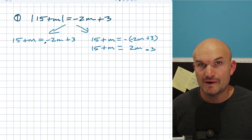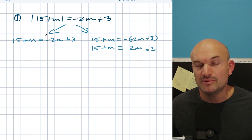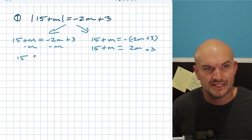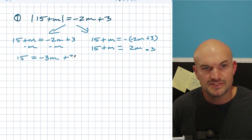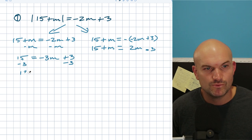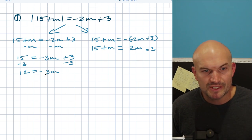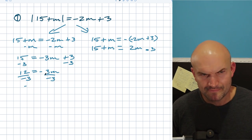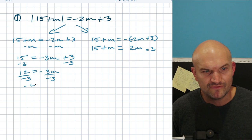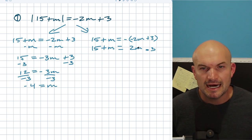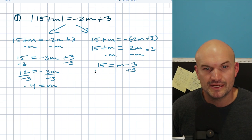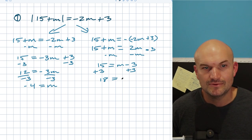So now we have two equations with variables on both sides. When solving linear equations, first get the variable to the same side. So: 15 equals negative 3m plus 3, subtract 3 from both sides to get 12 equals negative 3m, divide by negative 3 to get m equals negative 4. And over here, subtract m to get 15 equals m minus 3, add 3 to both sides, and I get 18 equals m.